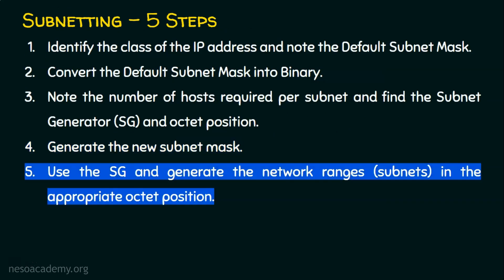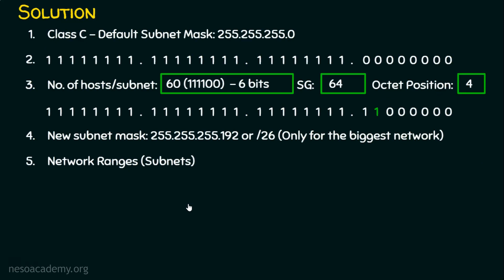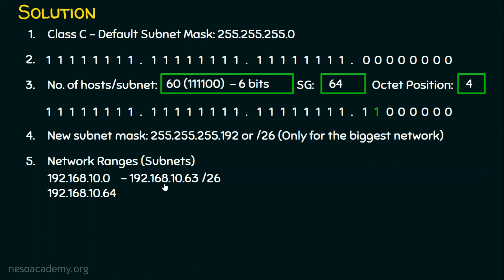Step 5: Using the subnet generator, we generate the network ranges. The starting IP address is 192.168.10.0. We add the subnet generator 64 to the fourth octet, giving the next subnet starting at 192.168.10.64. So the first subnet range is 192.168.10.0 to 192.168.10.63 /26, and we hand this range over to the 60-users network.